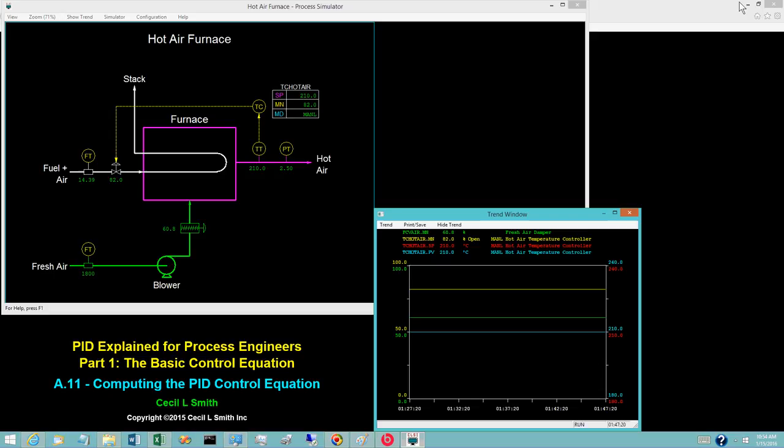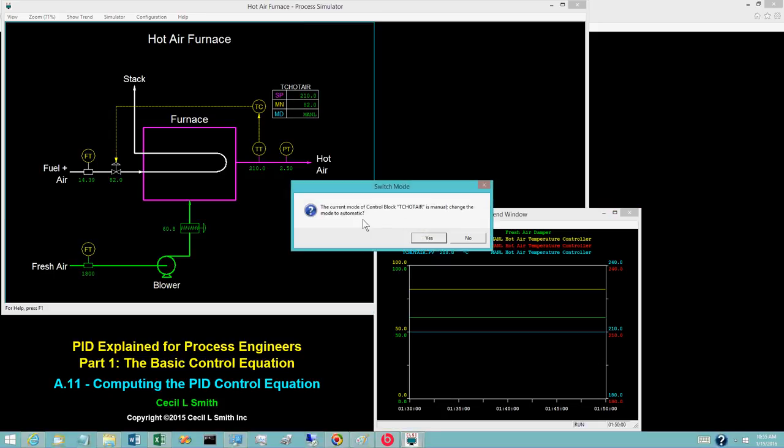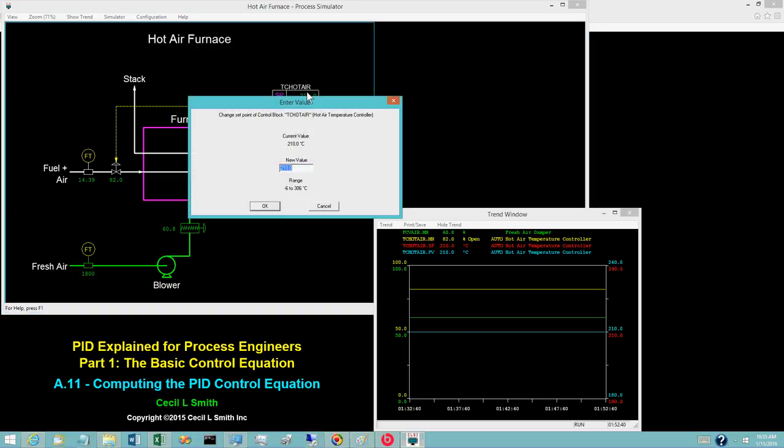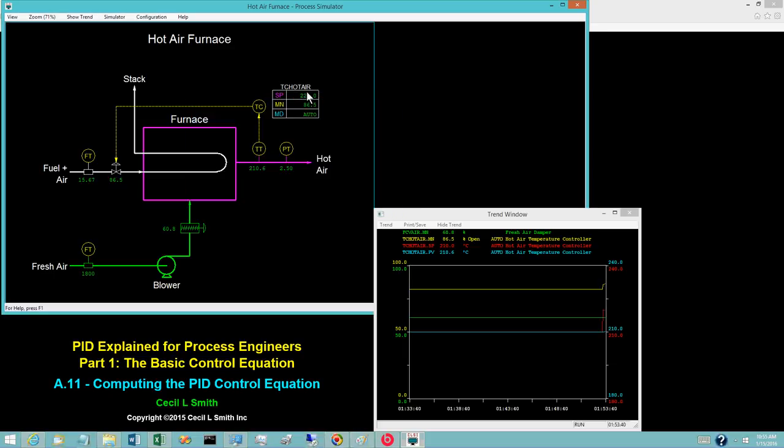We can use the simulator to illustrate the values computed for the controller output for a sampling time of one second. Switch the hot air temperature controller to auto. Change the setpoint to 220 degrees Celsius. After a cycle or two, place the simulator in hold. Maximize the trend display.